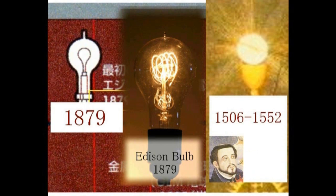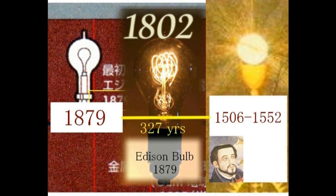実はイエズス会の人たちはバルブ電球を知っていました。エジソンがバルブ電球を市販化したのは1879年前後です。しかし同じものがルネッサンスの時代にありました。右のランプがそのランプです。電球です。その物体自体が光っている点に注意してください。そして7つの方向に光が伸びているのがわかります。つまりバルブ電球が発明される327年前にすでにこのような電球があったということになります。